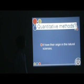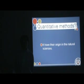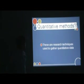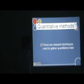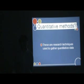What is quantitative method? They have their origin in the natural sciences. Quantitative methods are techniques used to gather quantitative data information, dealing with numbers and anything measurable, such as statistics. Tables and graphics are often used to present results of the methods.